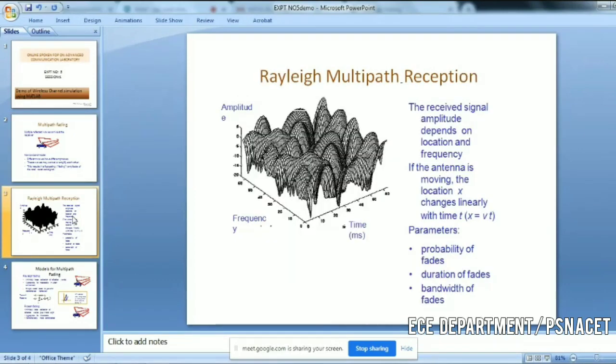When we talk about the two channels, Rayleigh multipath reception and Rician models, this is the Rayleigh multipath reception. The received signal amplitude depends on the location and frequency of operation. The antenna is moving, the location changes linearly with respect to time. Generally, displacement is velocity multiplied by time.